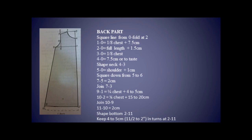Then 1 to 9 is 1/4 chest plus 4 to 5 cm — that is for freeness; in addition to the chest line we add 4 to 5 cm for freeness. Then 2 to 10 is the same, 1/4 chest for freeness, and we have to add 15 to 20 cm because it is easy to walk — so we add more fullness at the bottom circumference. Then join 9 to 10. Then 10 to 11 is 2 cm for bottom shape, so shape the bottom line from 11 to 2.